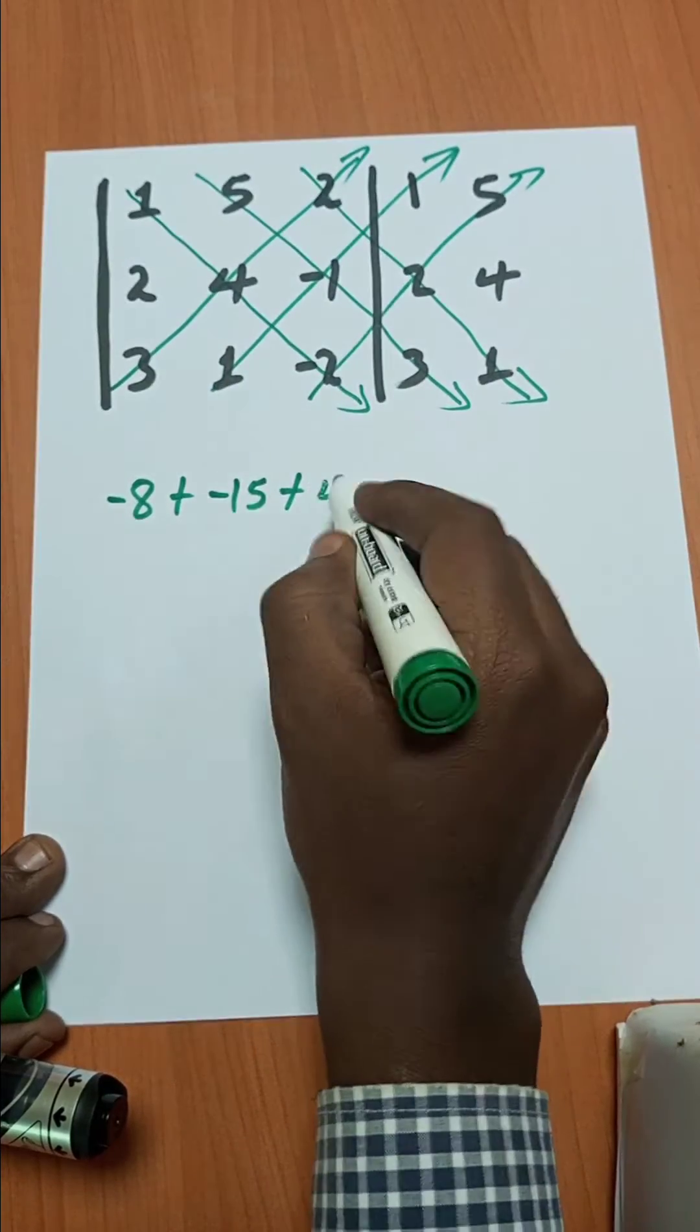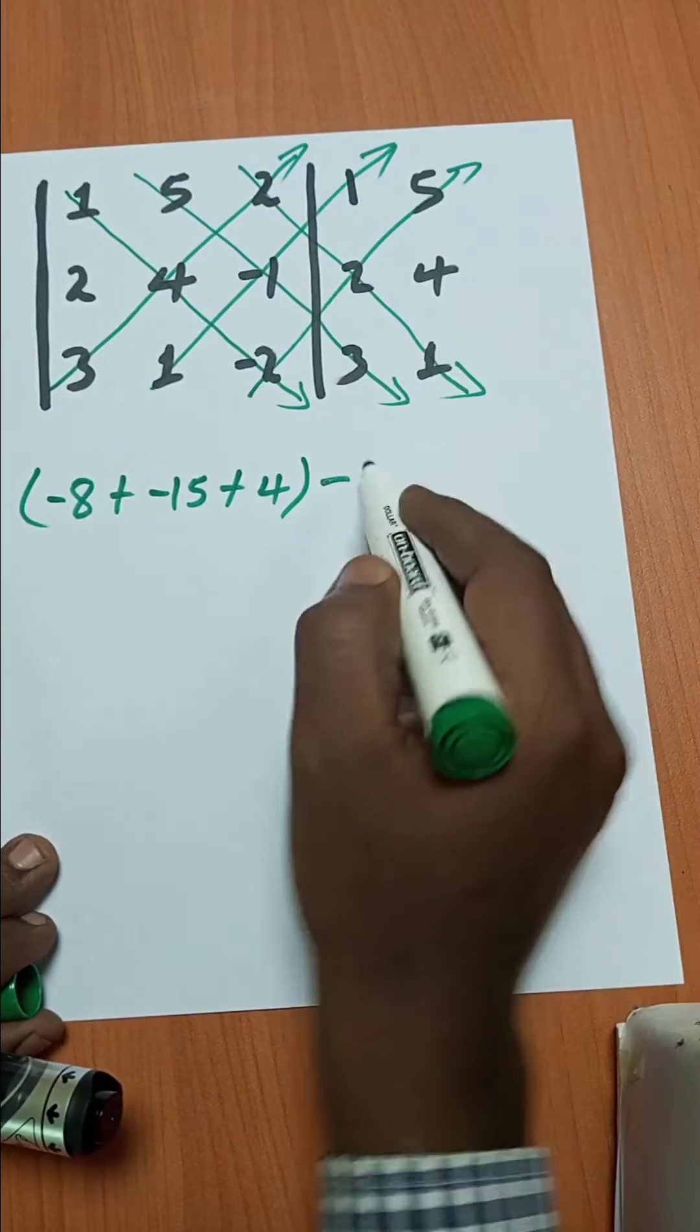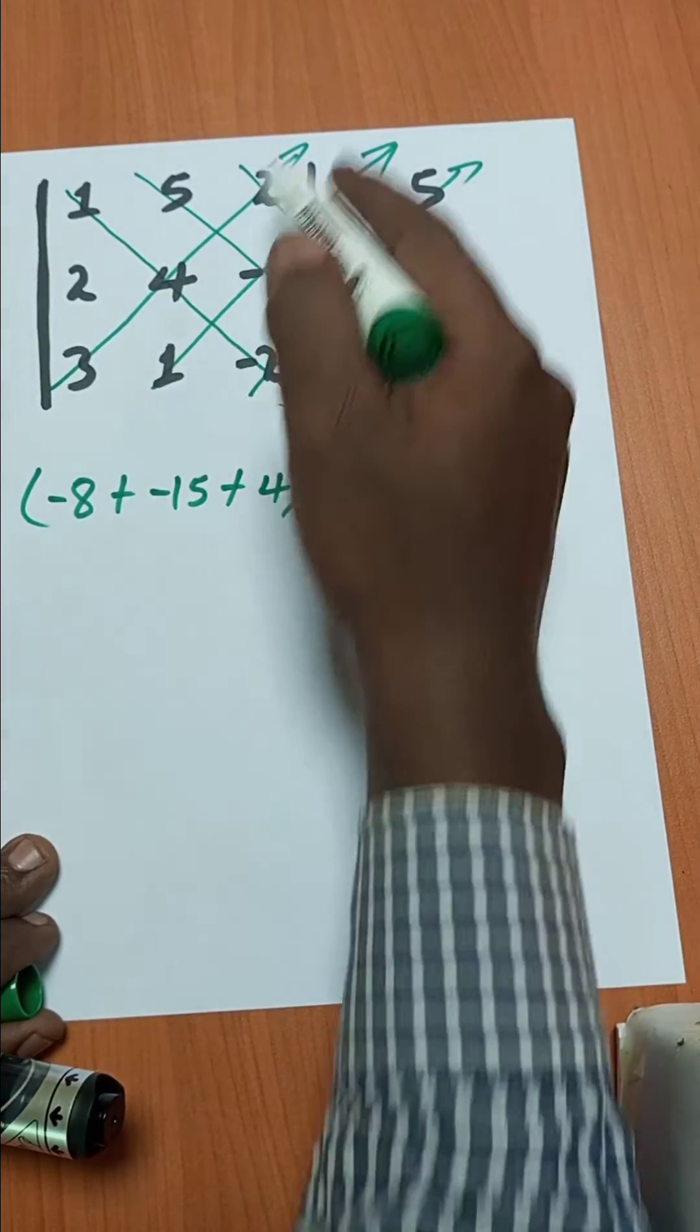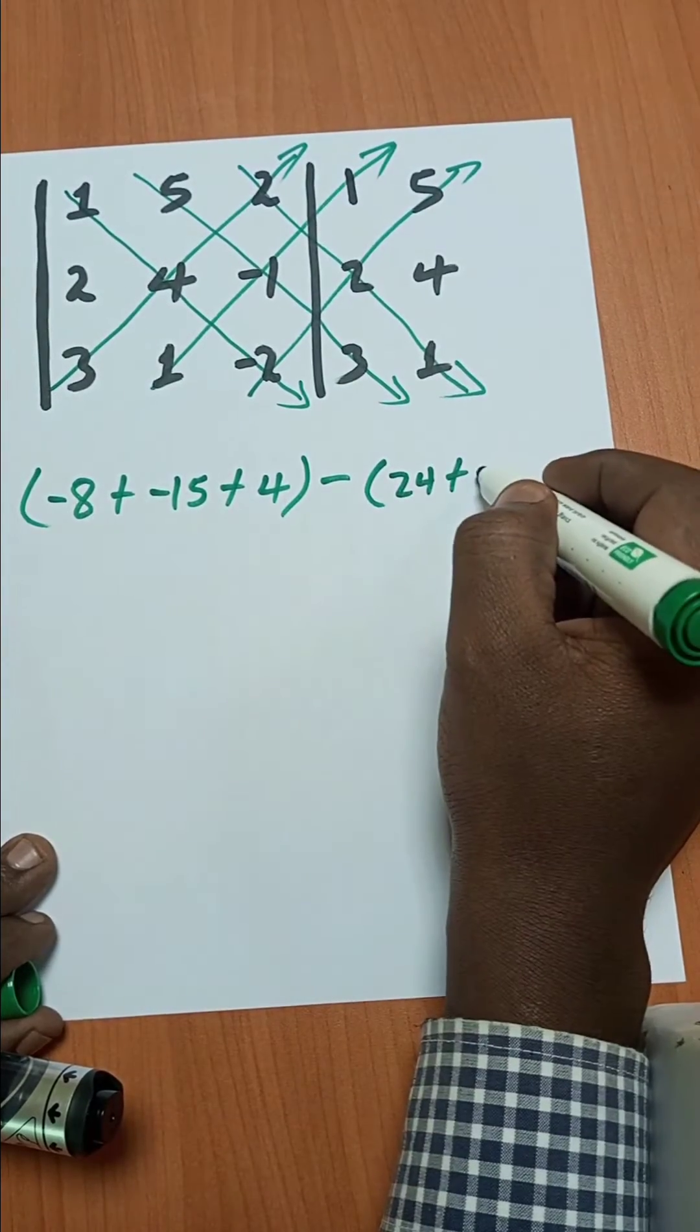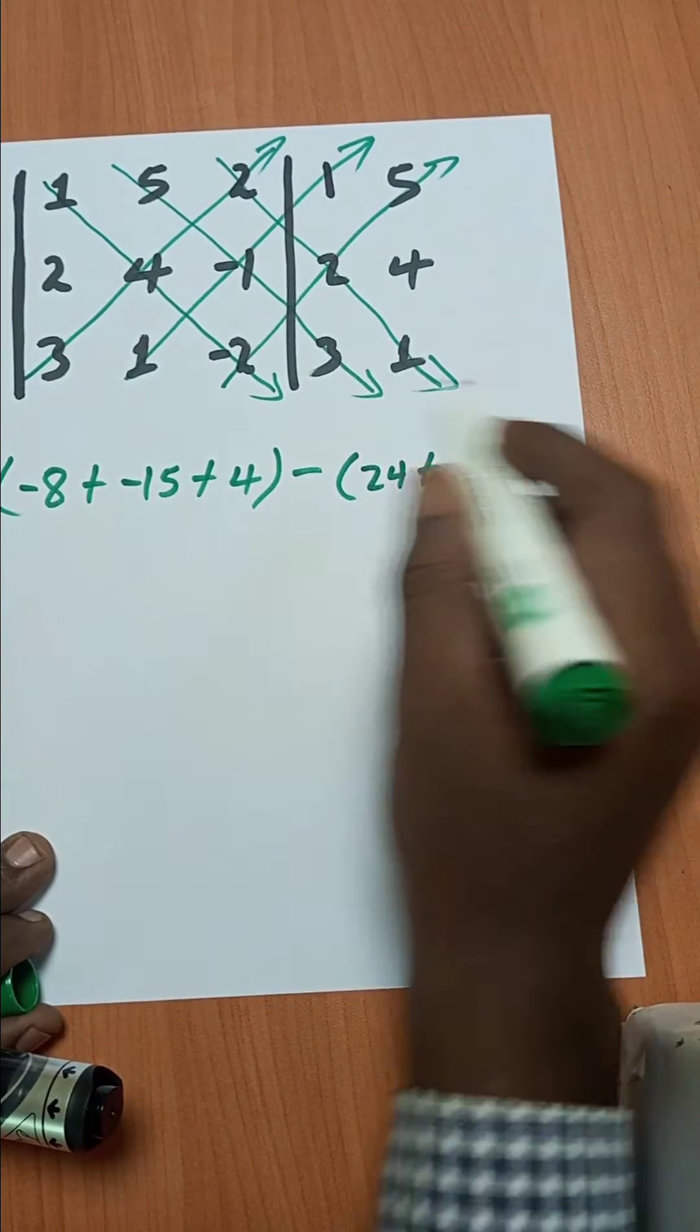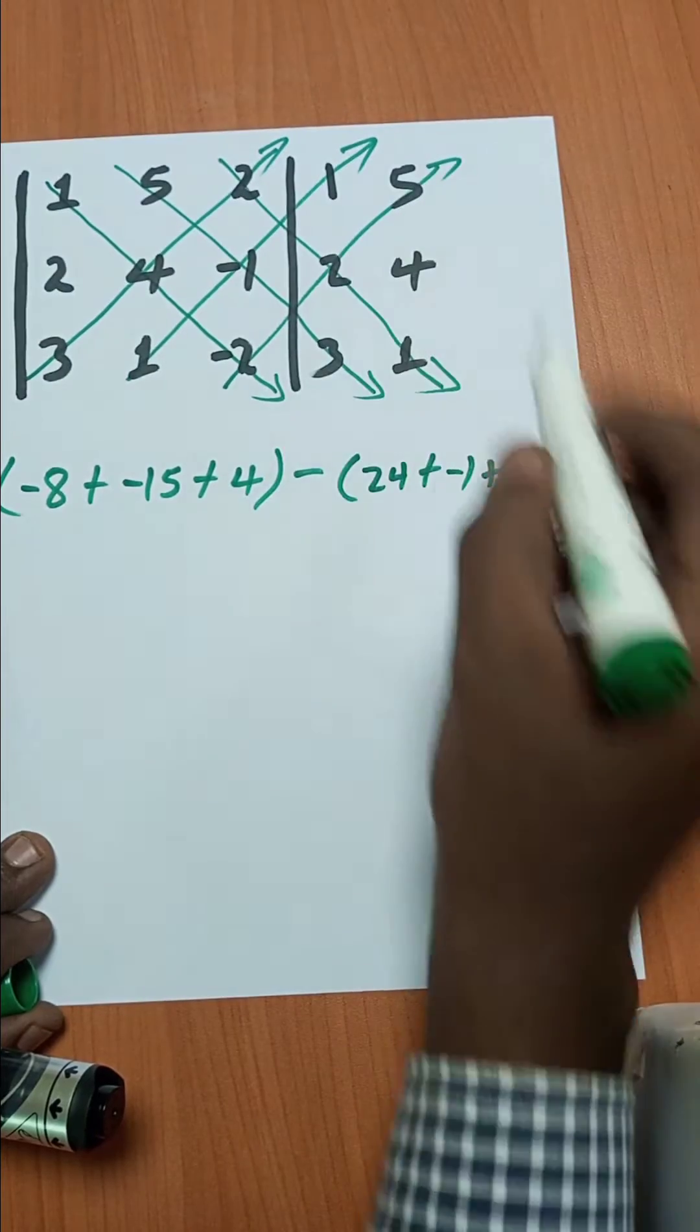Then minus the product of this diagonal. Three times four times two is twenty-four, plus one times one times one, plus negative two times five times negative one, which gives negative twenty.